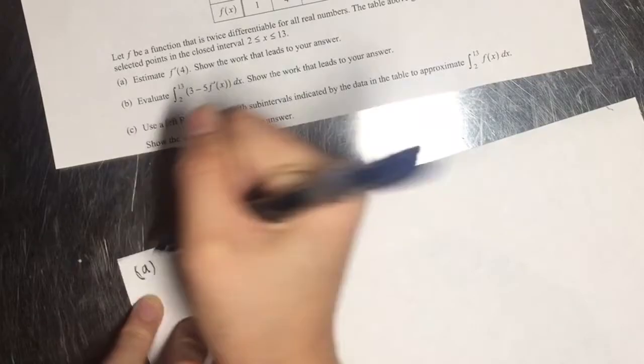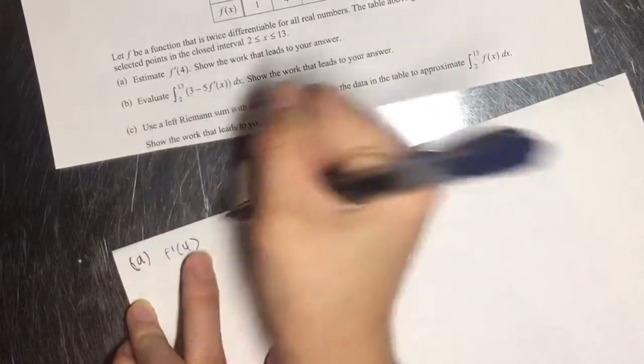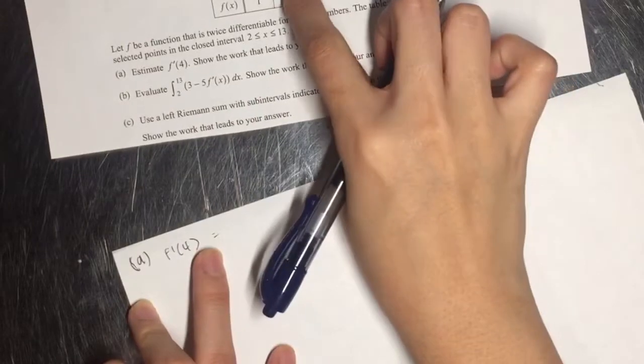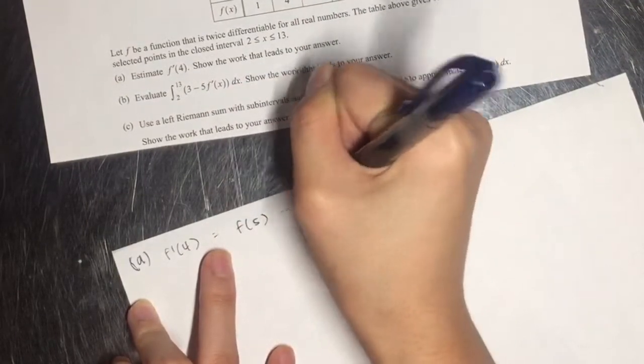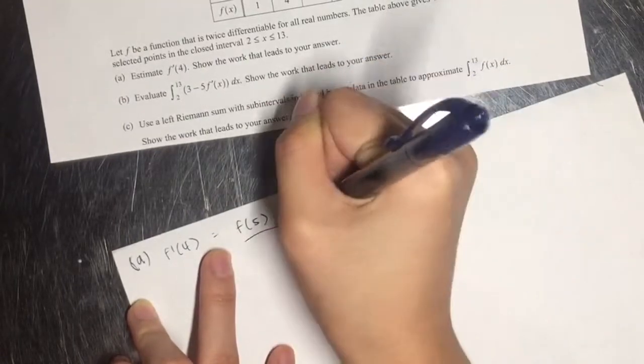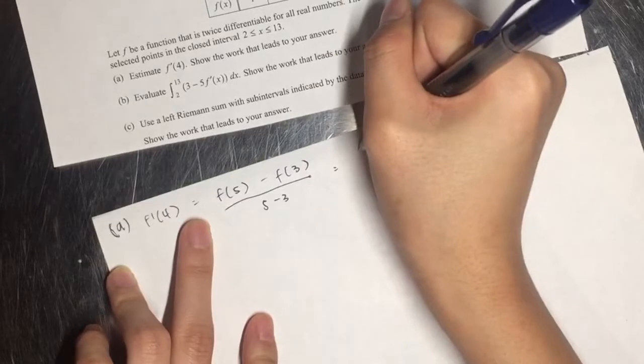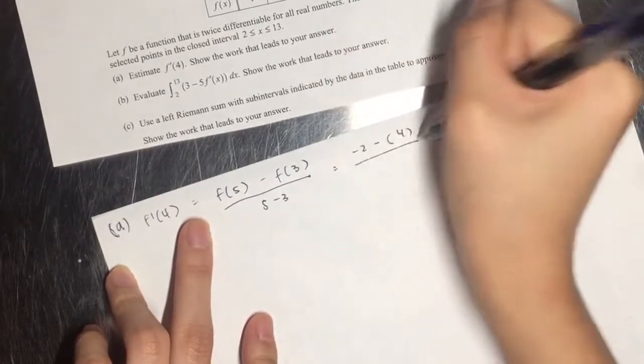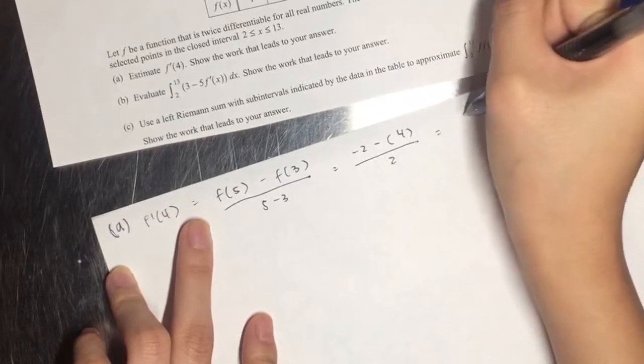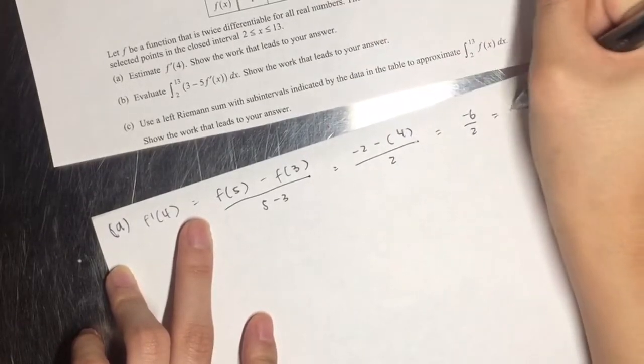Let's solve letter A. It says, estimate F' at 4. Show the work that leads to your answer. So to find F' at 4, there really isn't a 4 in the table. So we're just going to have to do the average slope equation. So it's F of 5 minus F of 3 over 5 minus 3. And we just plug in the values and we just solve it. So it's negative 6 over 2, which equals negative 3.